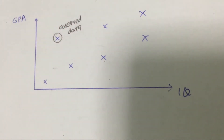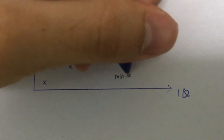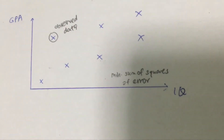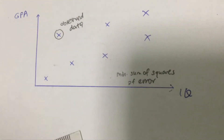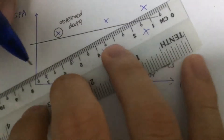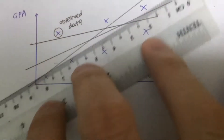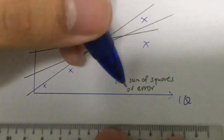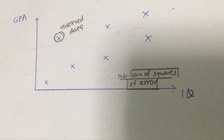The idea of linear regression is that we want to find a particular model such that it gives a minimum sum of squares of error. What do we mean by finding a model? There are so many possible models we could fit to the data — the model could be like this, or like this, or like this, and so on. We want to find the one that gives the minimum sum of squares of error. Finding this minimum sum of squares of error is what is known as the least square criterion.